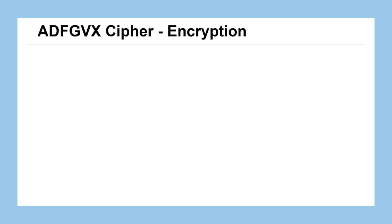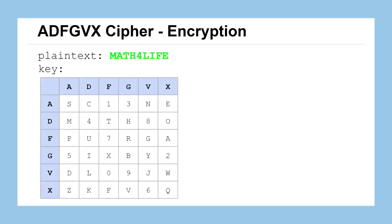So let's take a look at the encryption process. We'll take our plaintext message, which is 'math 4 life.' The key when we use this cipher is not a letter, number, or word, but rather a table of information called a Polybius square — a six-by-six square where each of the rows and columns are labeled with the characters A, D, F, G, V, X. The interior of that table is filled up with the 26 English characters and the 10 numerals 0 through 9, so we can encrypt messages that have both letters and numbers.